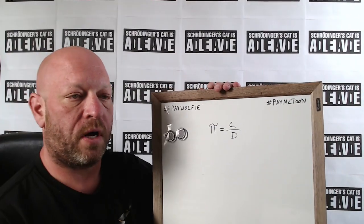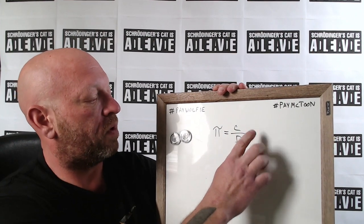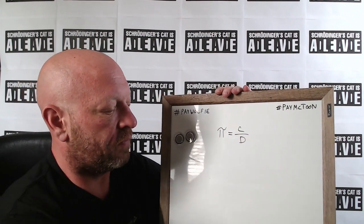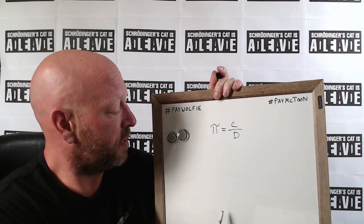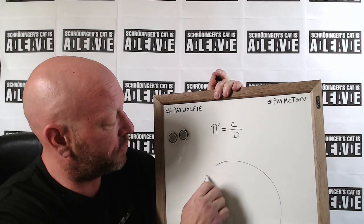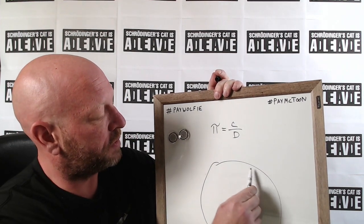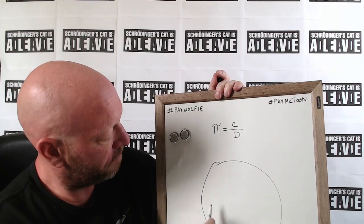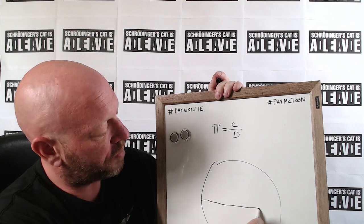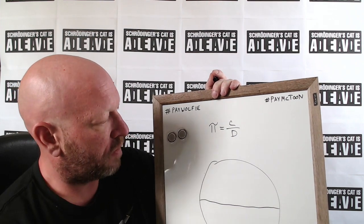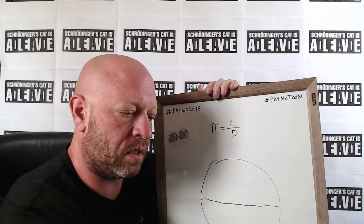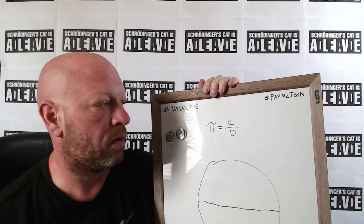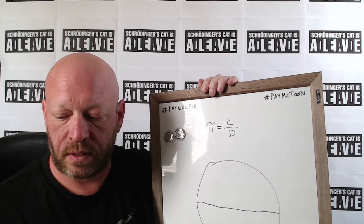Let's talk about what Pi is real fast. Pi is the ratio of the circumference of a circle to the diameter. If you have a circle, the circumference is the length of the outer edge, and the diameter is from exactly one side of the circle to the other. We'll take some measurements and pop them into a calculator to see how close we can get to the accepted value of Pi.